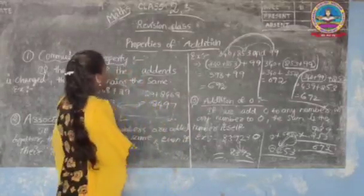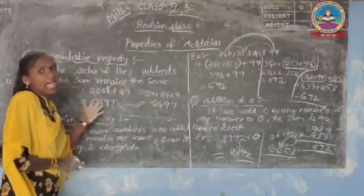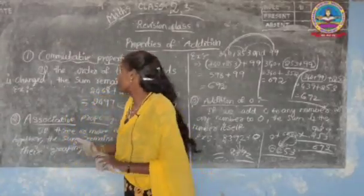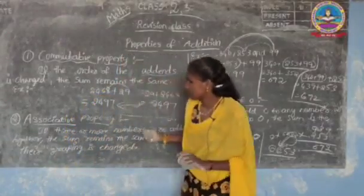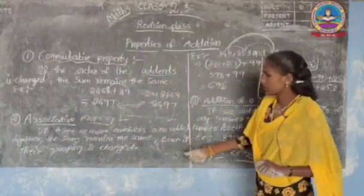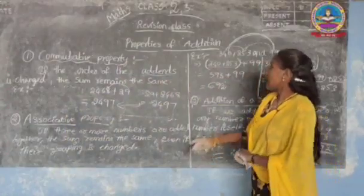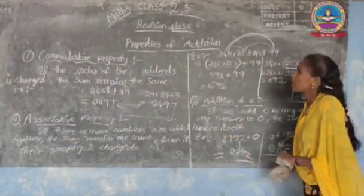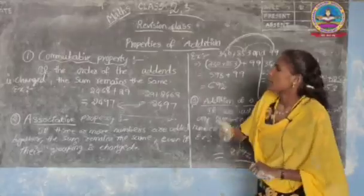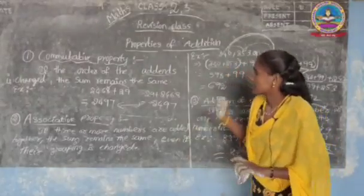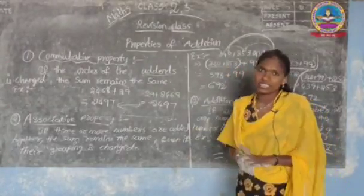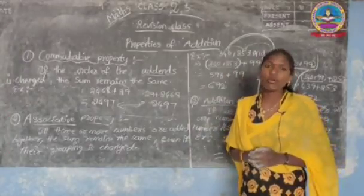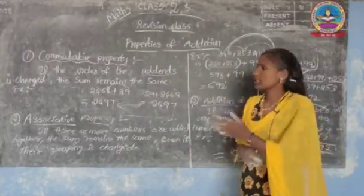Okay children, these are the properties of addition. The first one is commutative property — it is also called order property. The second one is associative property. And the third one is addition of zero. I hope you understand what the properties of addition are.